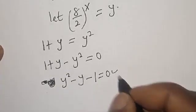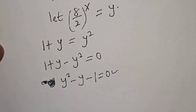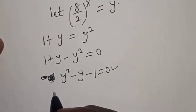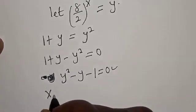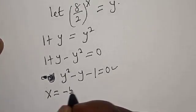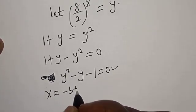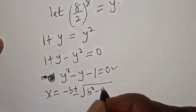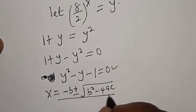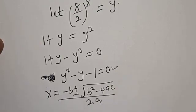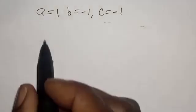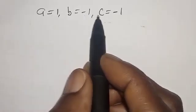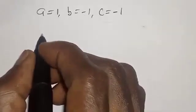This is a quadratic equation. Let's solve using the quadratic general formula: y is equal to minus b plus or minus square root of b squared minus 4ac, over 2a. Now a is equal to 1, b is equal to minus 1, and c is equal to minus 1.